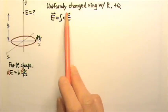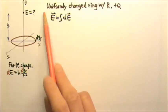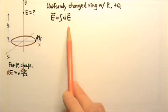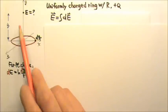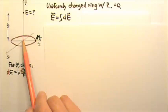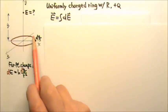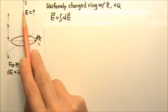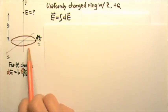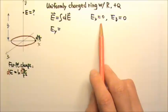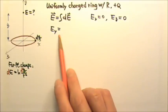Because electric field is a vector, we have to add dE by adding vectors. It can be easier for us to integrate by component. This ring is uniformly charged with positive q. By symmetry, we know that the net electric field above the center of this ring must go upward, because the field goes out of a positive charge. So the net electric field's x component and z component must be zero.